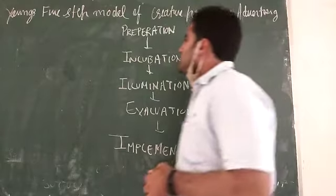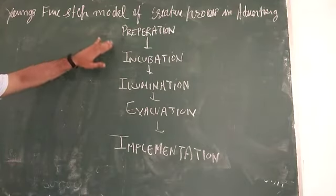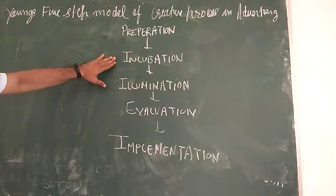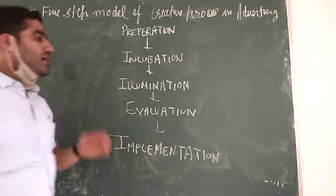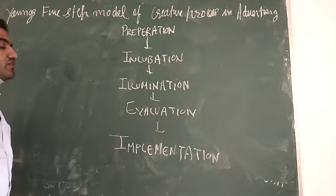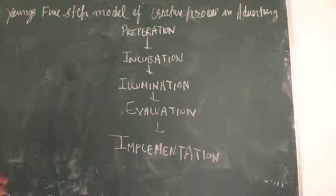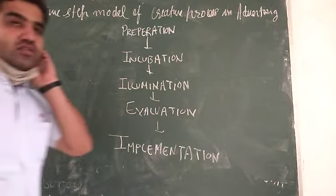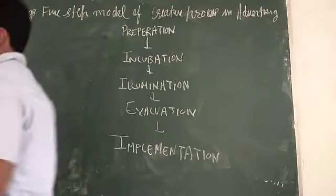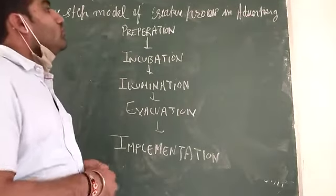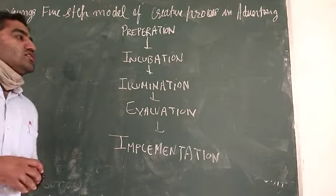So this is the process of creativity in advertising. Preparation: getting information through research and study. Incubation: transforming that information into ideas. Illumination: arranging or classifying the ideas into particular sequence. Evaluation: evaluating the ideas that are best to solve the problem, and finally one solution is constructed and that is implemented for the solution of the problem. So these five steps are involved in the creative process in advertising.